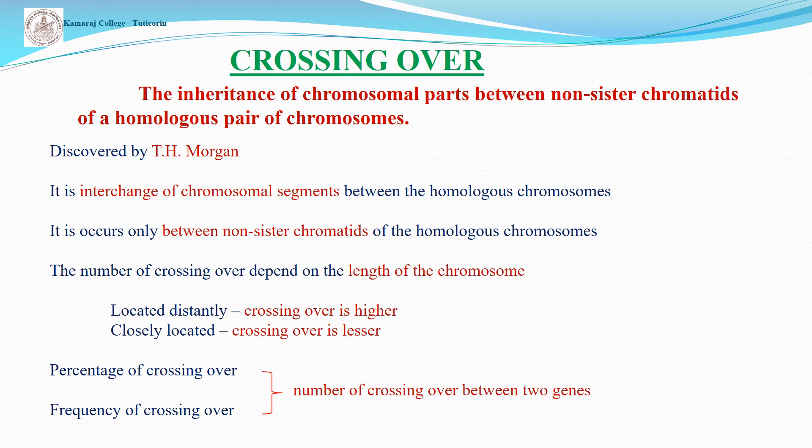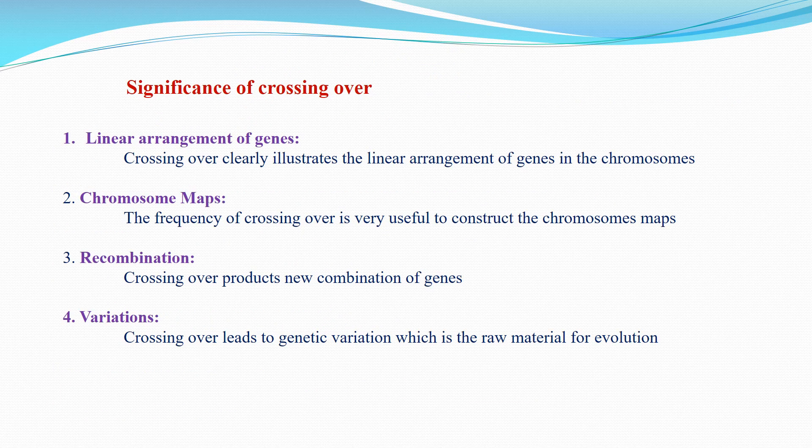When the genes are located distantly, the chance of crossing over is higher. When the genes are closely located, the chance of crossing over is lesser. The frequency of crossing over is calculated as the number of crossovers between the two genes divided by the total.